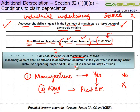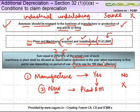The rate of additional depreciation is 20%. But if the asset is put to use for less than 180 days, then the depreciation is available at 50% of the rate, i.e., 10% — and that 10% is of the actual cost of such plant and machinery — and shall be allowed as a depreciation deduction in the year when the machinery is first put to use.